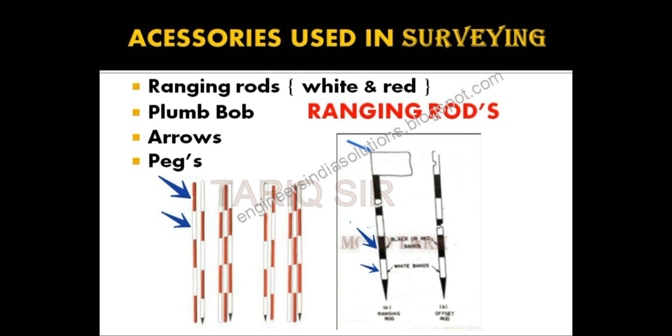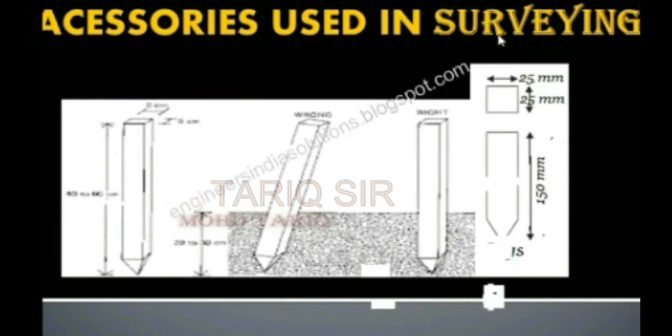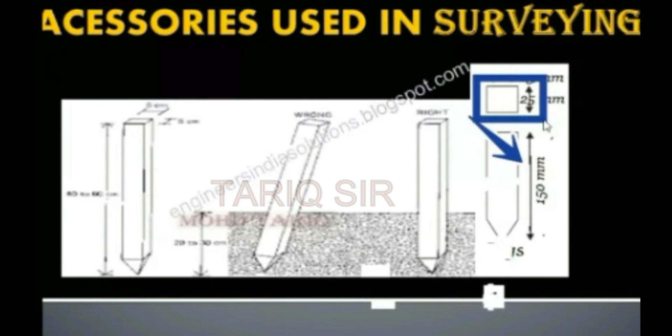Coming to the pegs, it is about 15 centimeter or 150 mm in height, and the square section is about 25 by 25 mm or one inch by one inch.